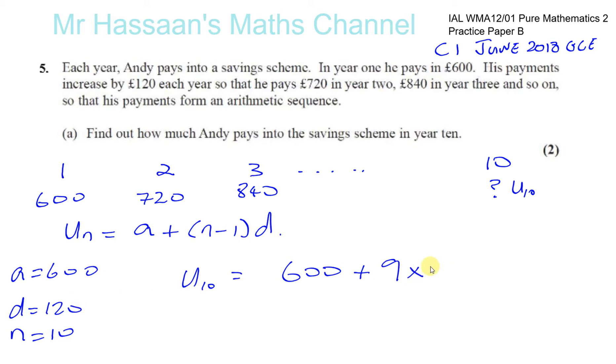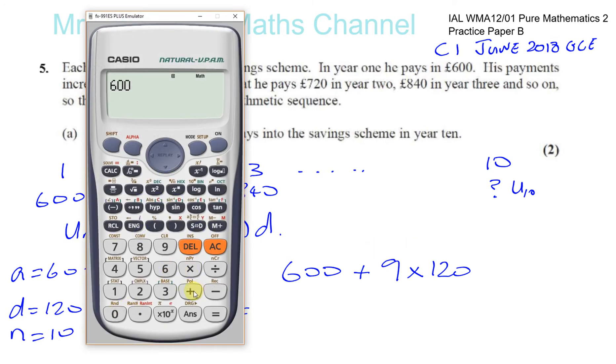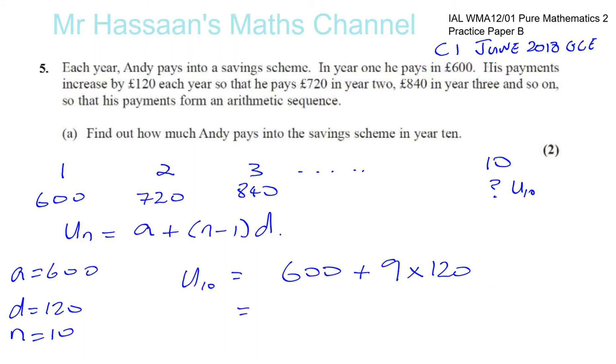This gives us 9 × 120 which is 1680. So £1,680 is how much he pays in year 10. That's part (a) done.